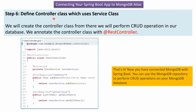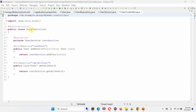Step six is to define the controller class that uses the service class. We have to create a controller class to perform CRUD operations in our database, annotated with @RestController. Here I have defined the class UserController, annotated with @RestController, and I have auto-wired the UserService object. It has two methods — addUser and getAllUser. Using addUser, we can create a new user in MongoDB, and using getAllUser, we can get all users from the MongoDB database. To call addUser, we have to use this URL, and to call getAllUser, we have to use this URL.